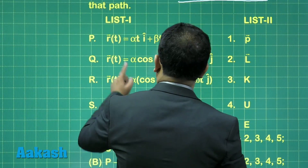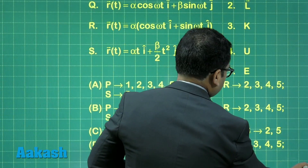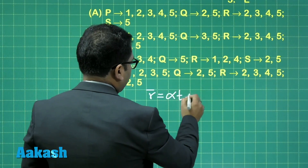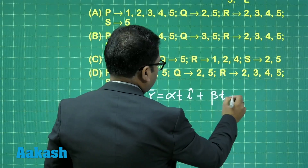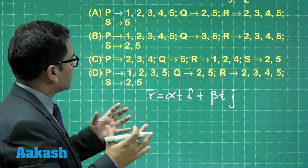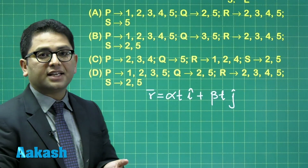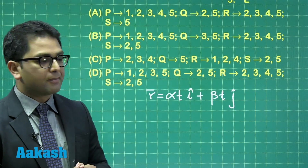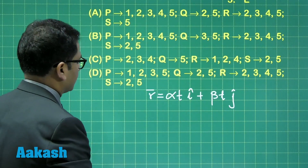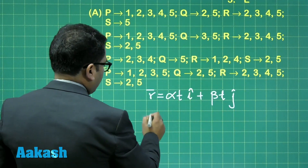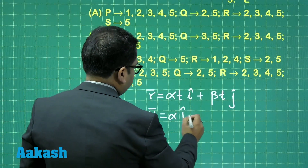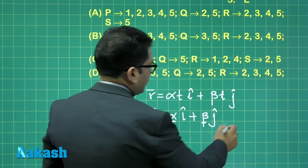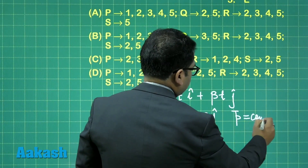First situation: R vector is α t î + β t ĵ. The velocity is therefore α î + β ĵ, which is constant. So if velocity is constant, that means linear momentum has to be conserved.